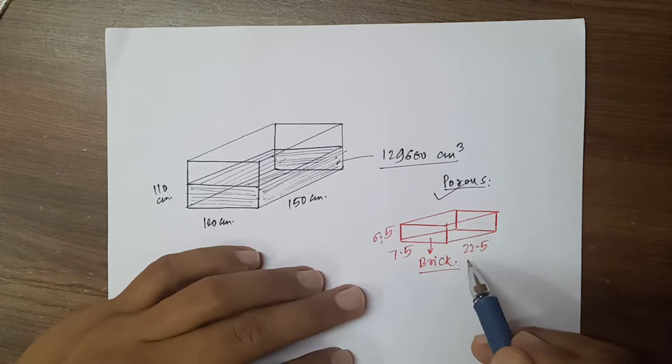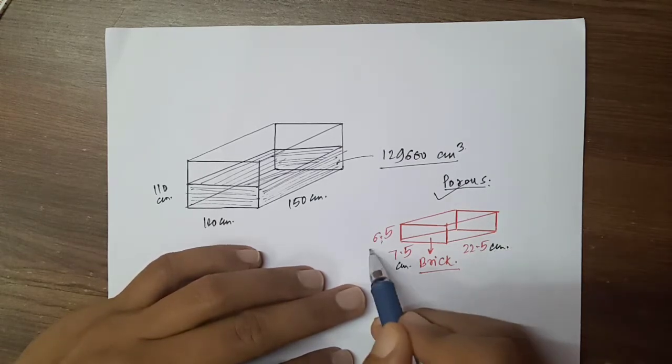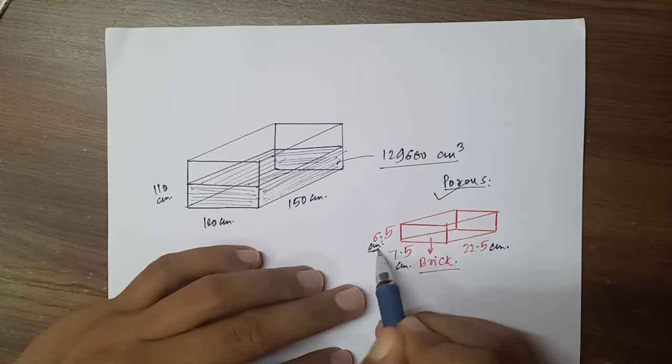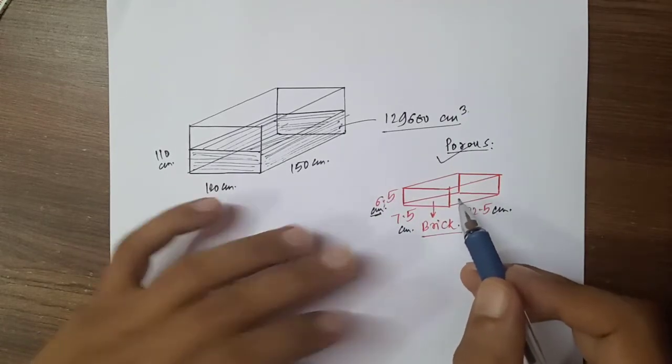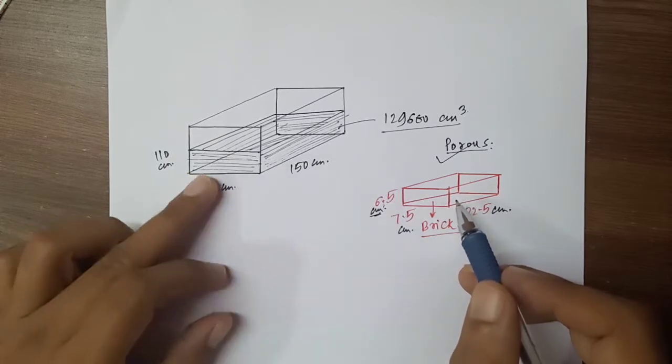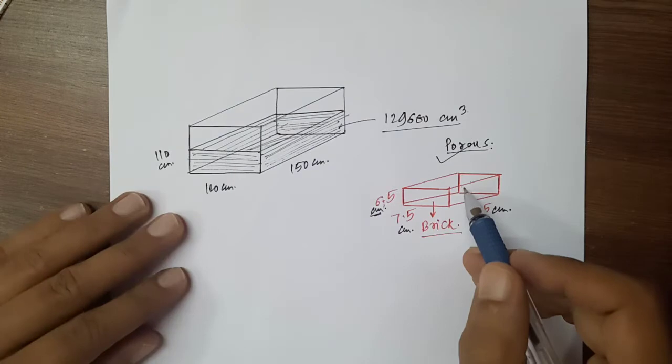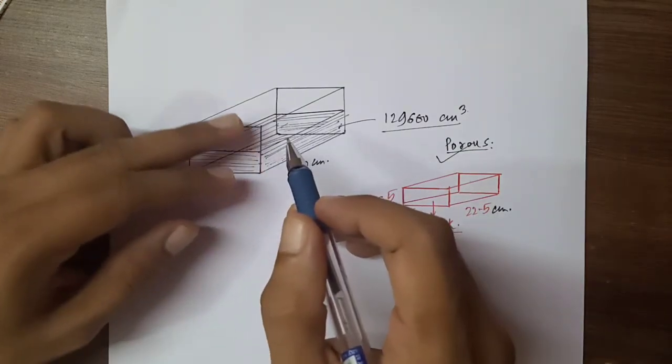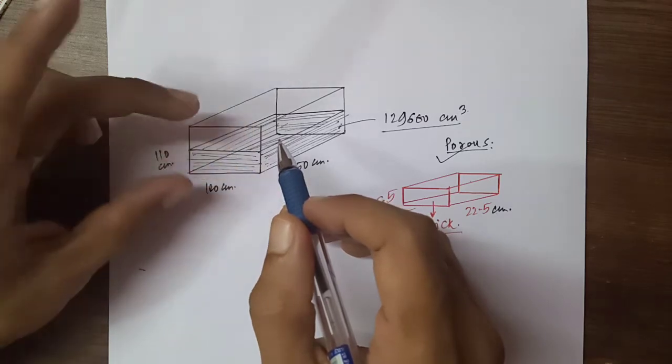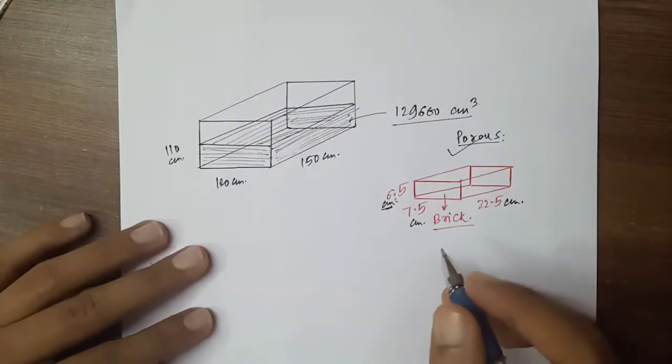This brick's dimensions are 22.5 cm, 7.5 cm and 6.5 cm. And what is the property? That this brick absorbs 1/17th of its volume of water. This has been given to us. Now the bricks have been placed until the water comes to the brim. This has been given to us.